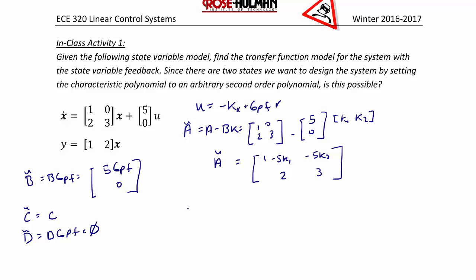So now we can find the transfer function. g of s equals c tilde, s i minus a tilde, inverse, times b tilde.